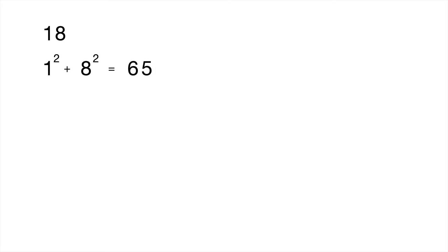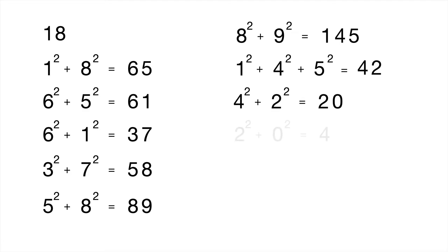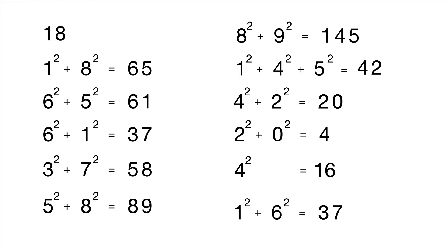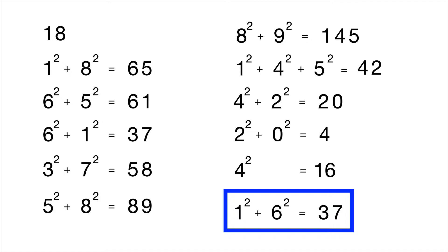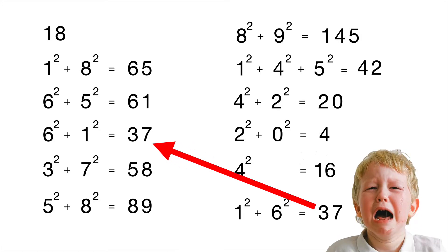Now let's look at a number that's not happy. With the input 18, we take 1 and 8, square each, and get 65. Going through the process more quickly — we take each sum, break out the individual digits, square them, add them up, and keep going, looking to see if we ever get 1. At one point we reach 16, and 1 squared plus 6 squared gives 37 — a number we've seen before. That means we're stuck in an endless loop, so 18 is not a happy number.